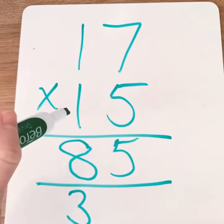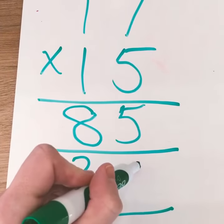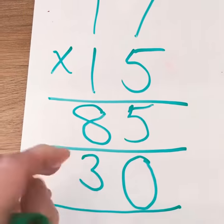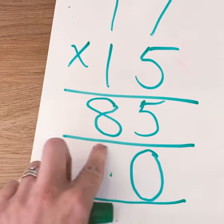These numbers here. But this isn't a one, is it? It's a ten. So we put a zero here to show that everything in this column is multiplied by ten.